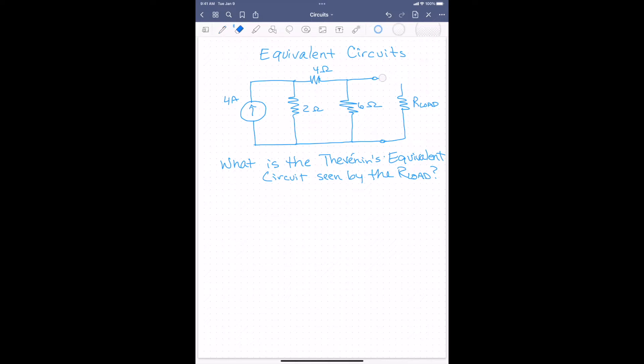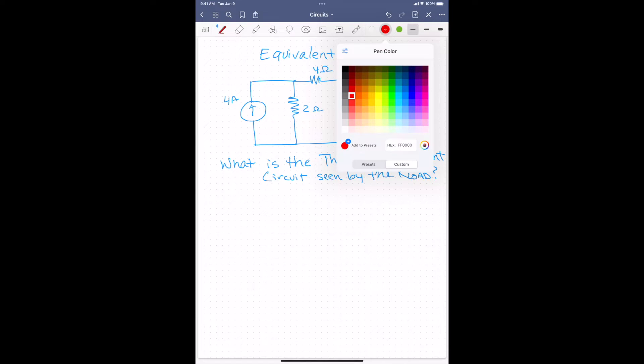So first thing we do is we remove the load resistor, and I usually just draw those little circuit circles. They're kind of like a connection point. We have to find VOC and I short circuit. So let's start with looking for the open circuit voltage VOC. That'll be the voltage across the 6 ohm resistor. And we can solve for that in any way we want. I'm going to choose to use nodal analysis in this case.